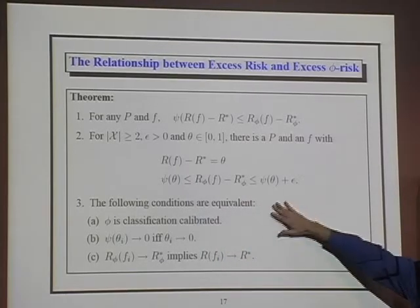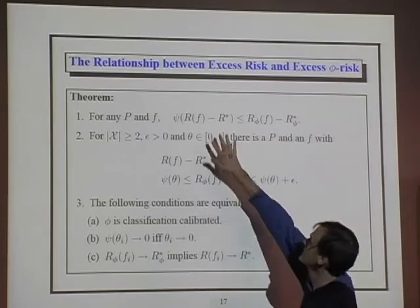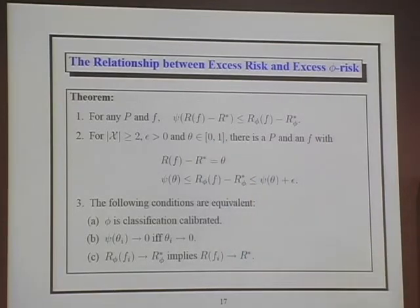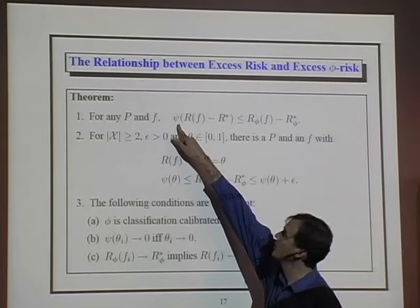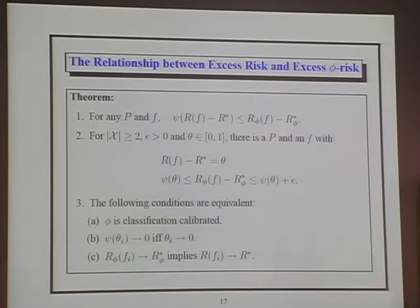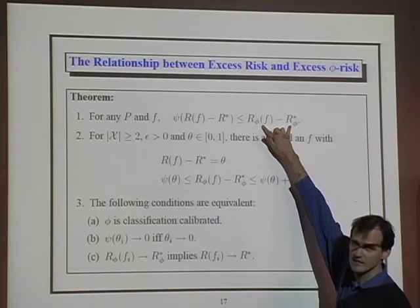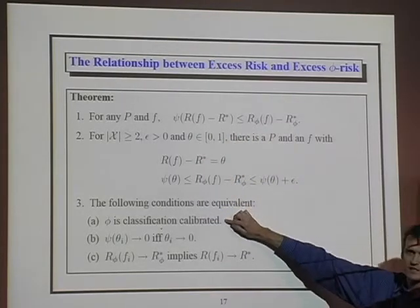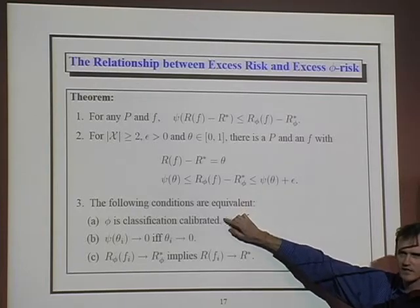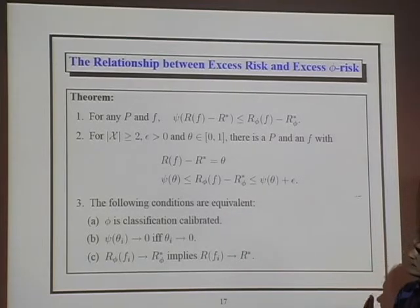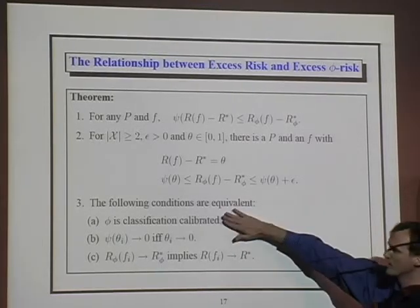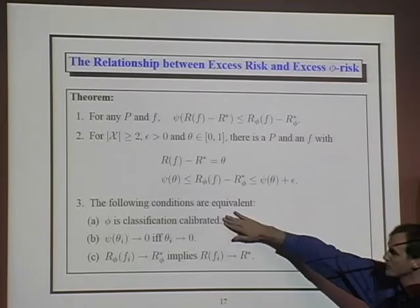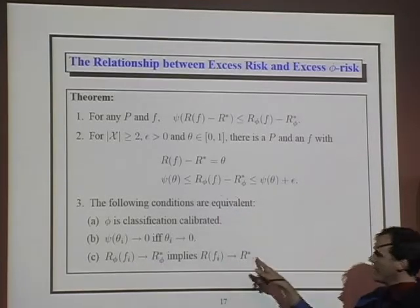The question is when this kind of bound is worthwhile: when does driving the excess phi risk to zero ensure the excess risk goes to zero? That happens precisely when the cost function phi satisfies the classification calibrated condition. This obviously necessary condition is also sufficient: minimal phi risk implies minimal risk.